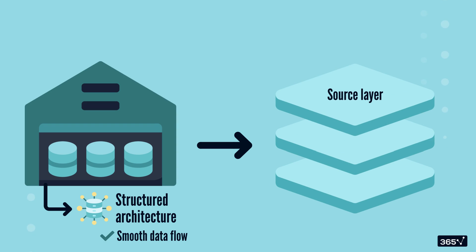There are three main layers to this architecture: the source layer, the staging layer, and the presentation layer. Think of them as a pipeline connecting raw data to actionable insights. Let's look at each one in more detail, starting with the source layer.